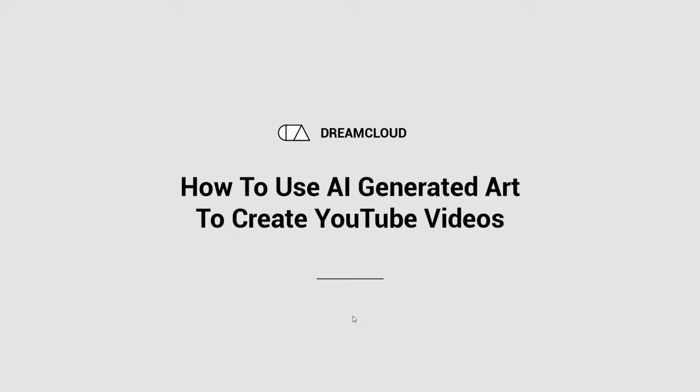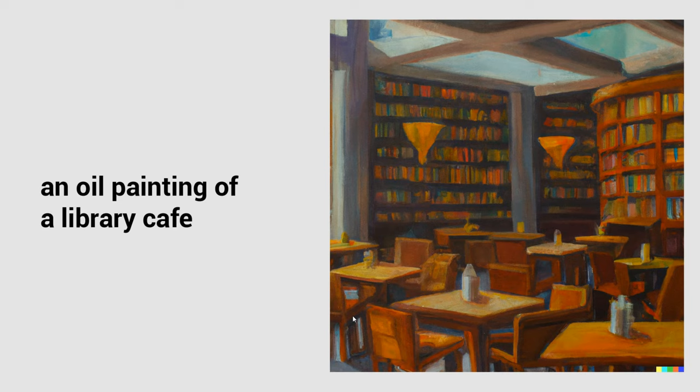In today's video you're going to learn how to use AI generated art to create YouTube videos. You might have heard of text to image before — this is a new type of AI that turns text into an image. Here's an example: an oil painting of a library cafe. You can put in absolutely anything — a library at a park, a cafe in front of the ocean, a photograph, an oil painting, a drawing — and the AI will create the image for you.